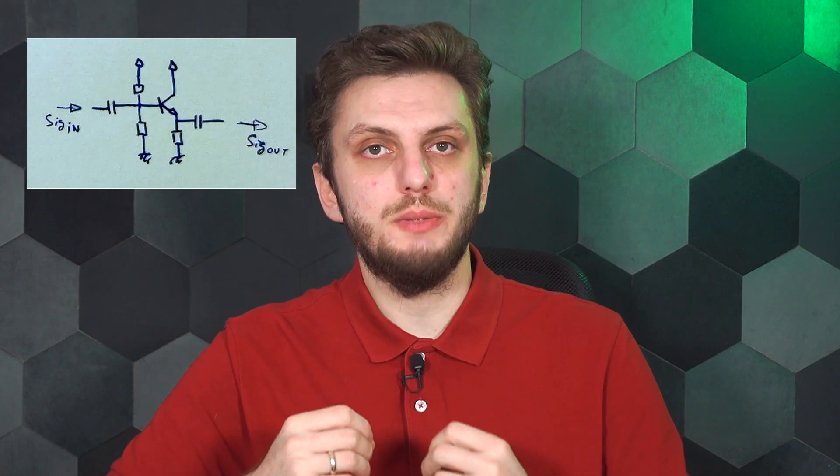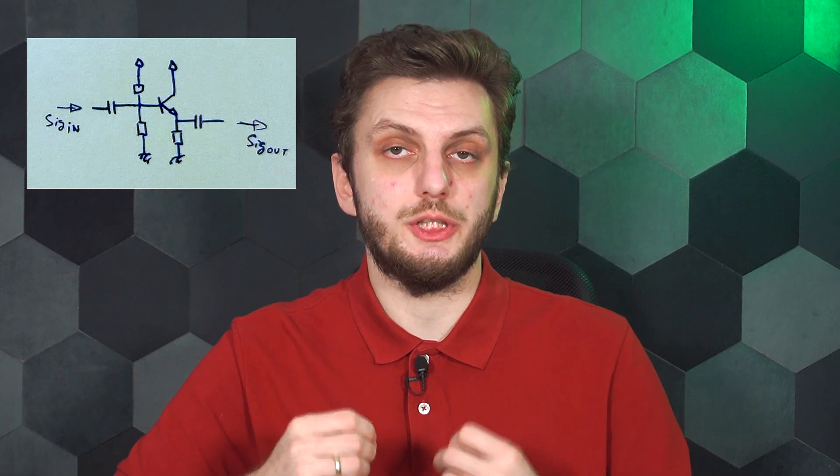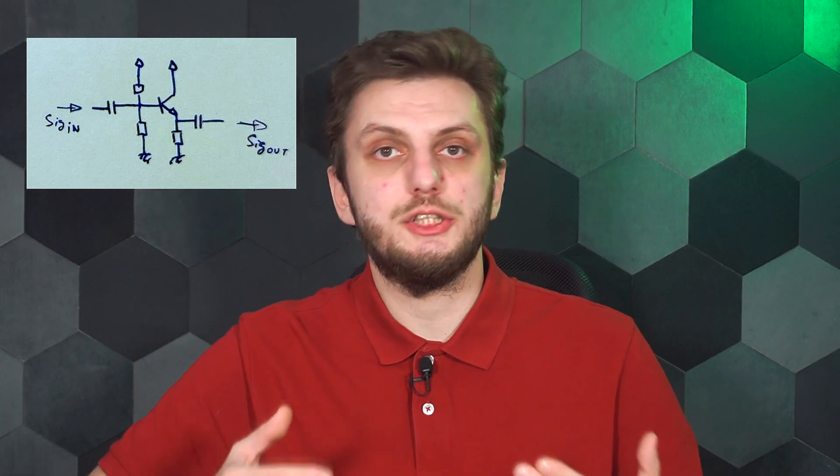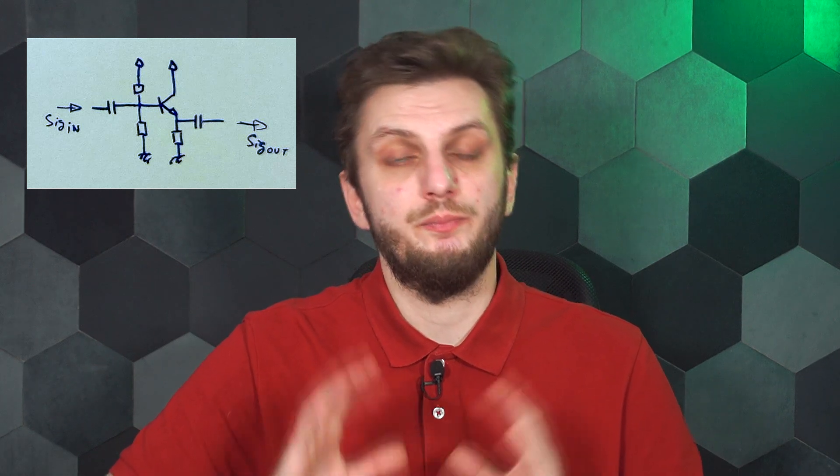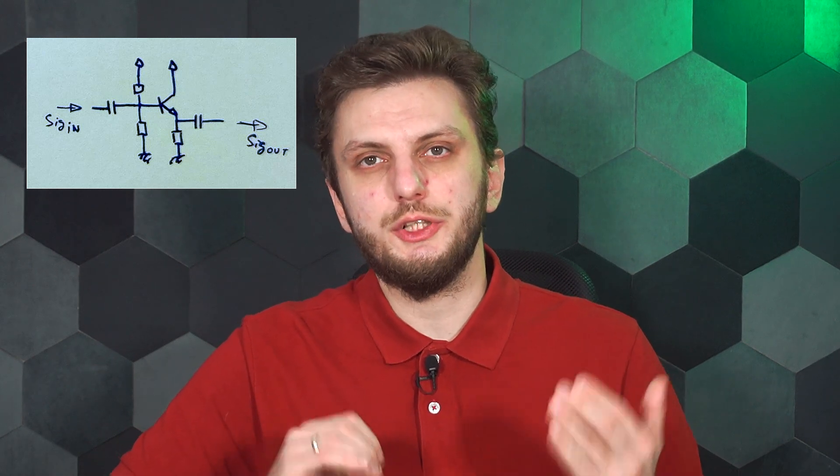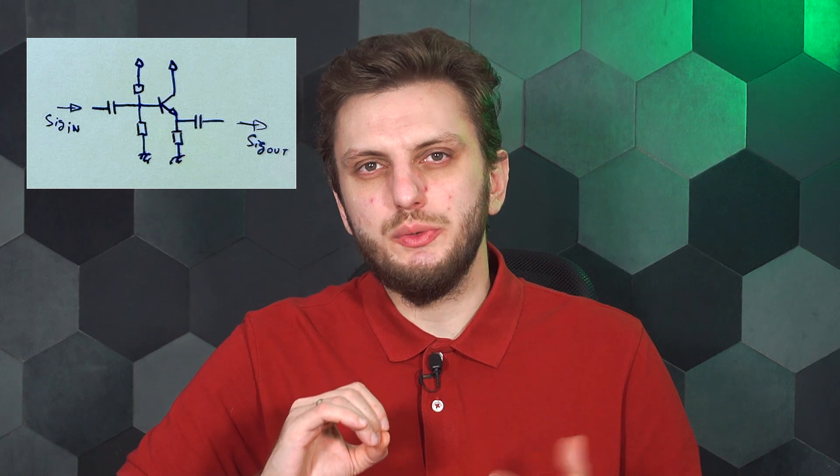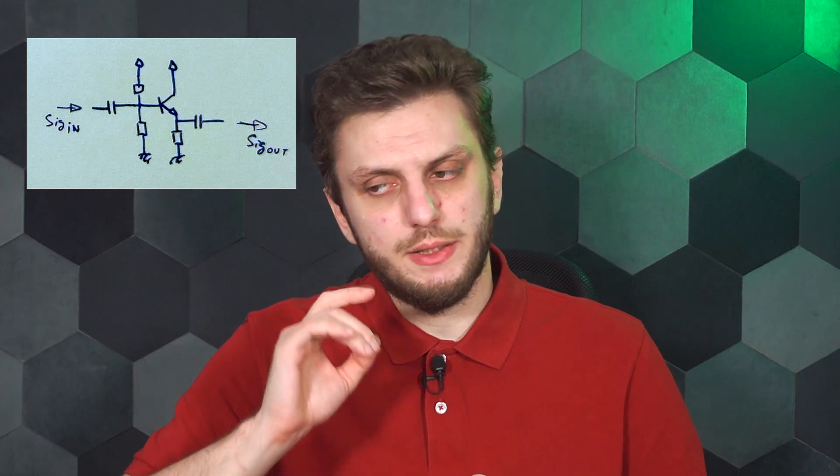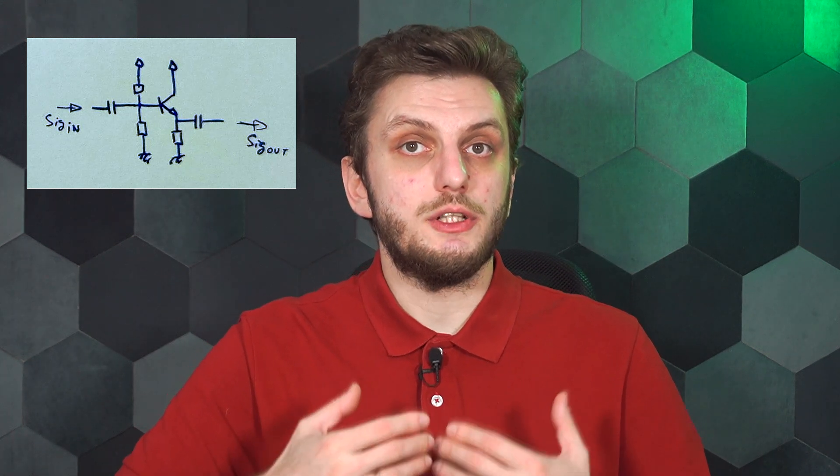The common collector amplifier is usually implemented by keeping the collector at a fixed voltage potential, and the signal enters through the base and exits through the emitter of the transistor. This means the base voltage will be almost the same amplitude as the emitter voltage. The voltage gain is close to unity, and because of this feature, this type of circuit is also called an emitter follower.